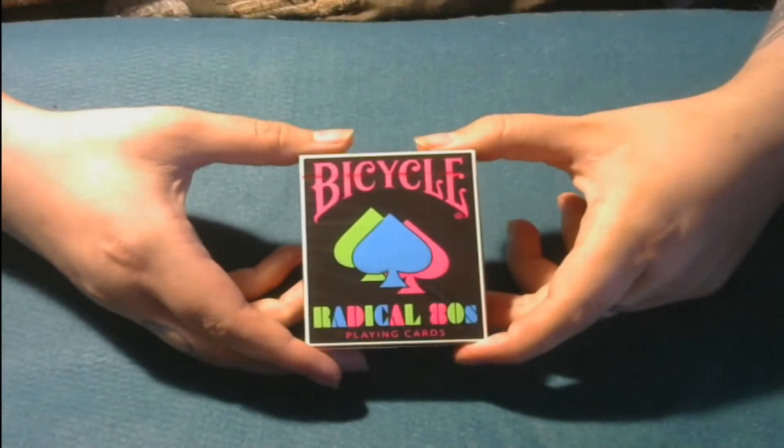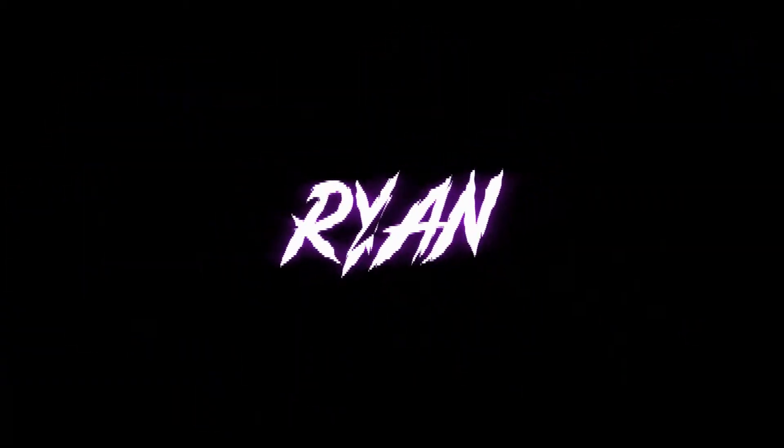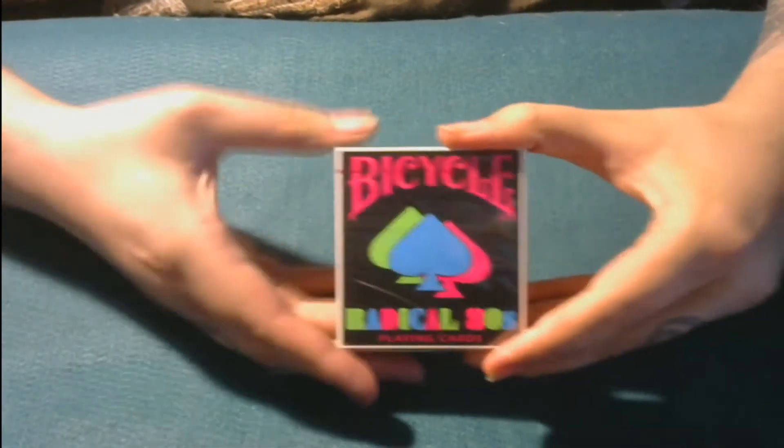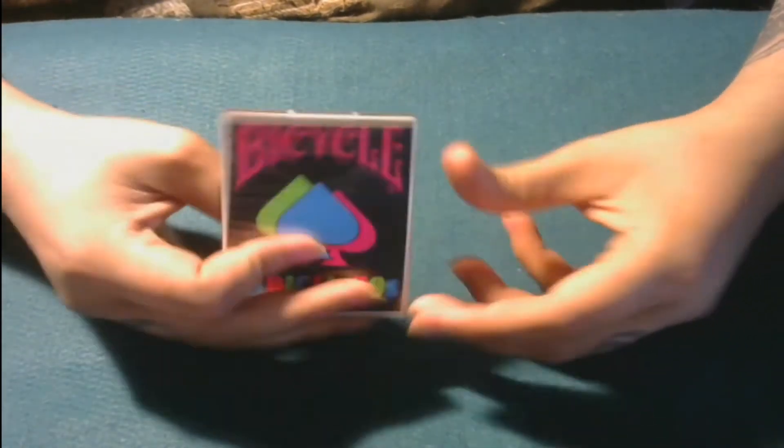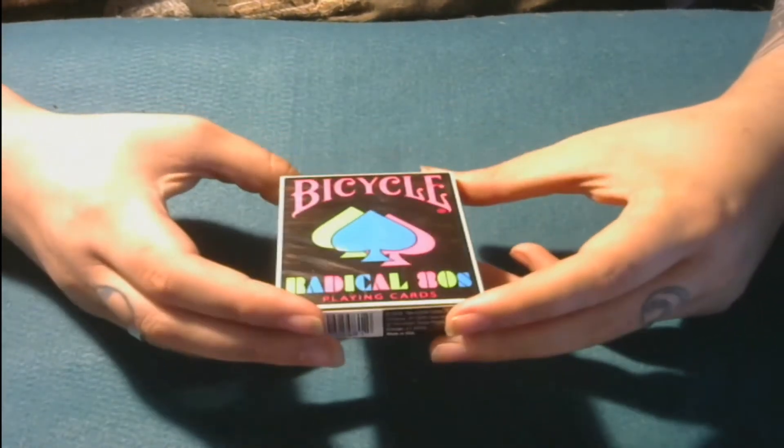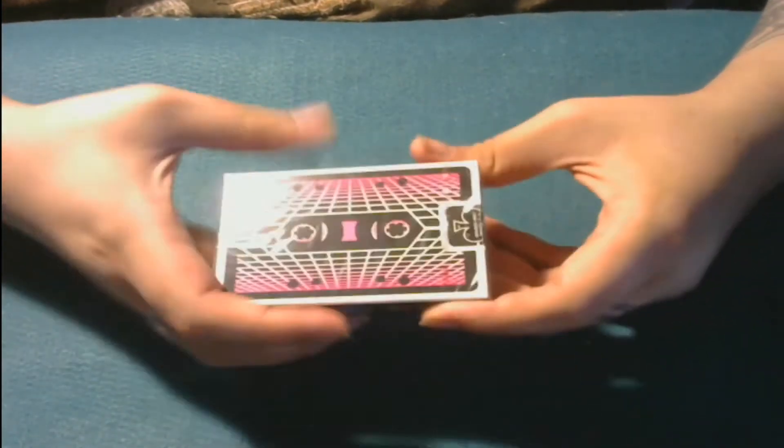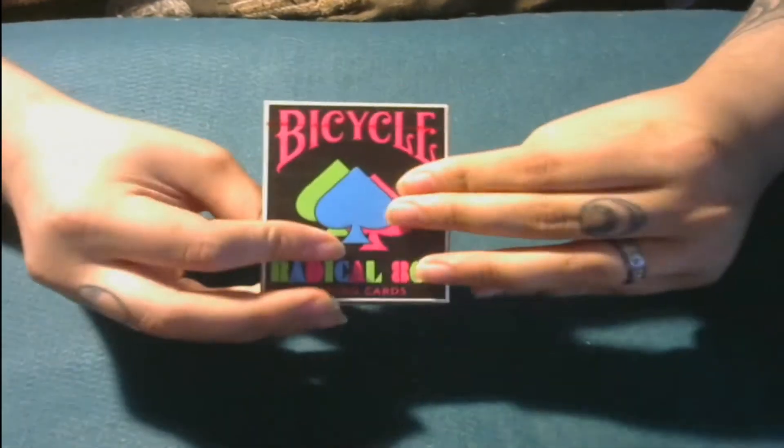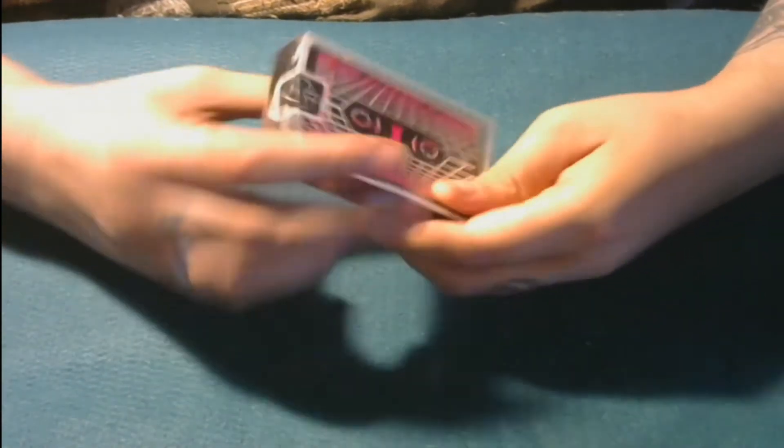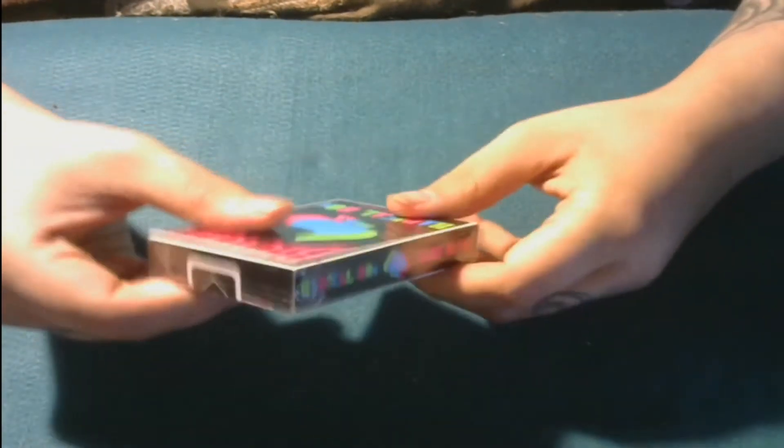Bicycle Radical 80s. Are they worth the price? Today we're going to be taking a look at the Bicycle Radical 80s. You can pick this up on Amazon, eBay, anywhere from $7 to $10. I'm going to be giving you my first impressions. I haven't opened this deck. It's brand new. I got two of them, so I'm going to be opening up this one for you guys and showing you what comes in the box, how they act when they first come out, and if this is worth the price. Let's get into it.